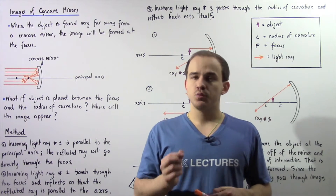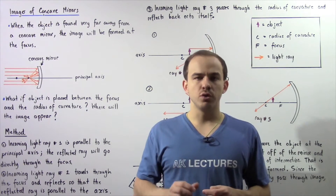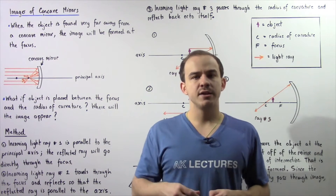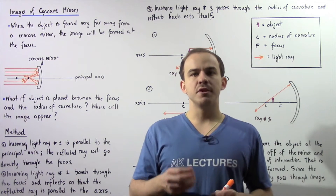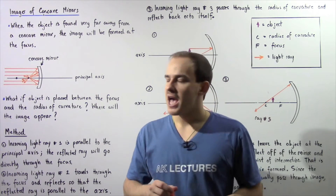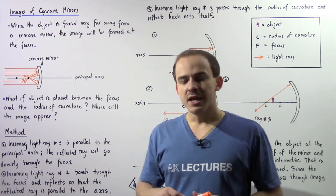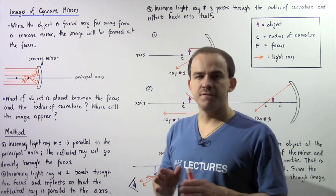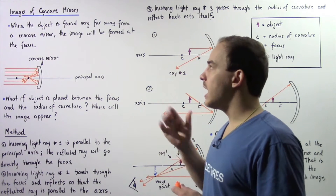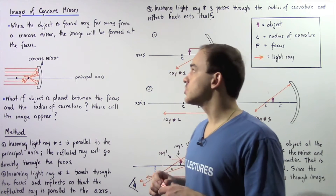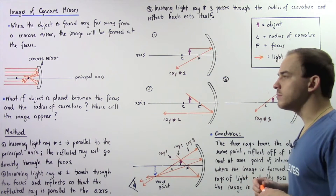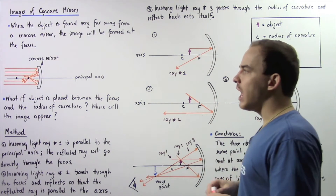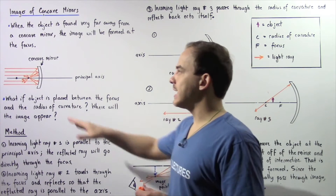In our discussion on plane mirrors, we said whenever we look into a plane mirror our brain forms a virtual image behind that mirror. So now we're going to examine the formation of images as a result of concave mirrors. In the previous lecture we saw that when the object is found very far away from the concave mirror — for example an infinite distance away — the image will be formed exactly at the focus, because the reflected rays of light will all intersect at the focus.